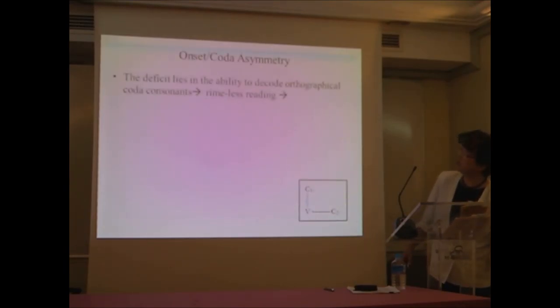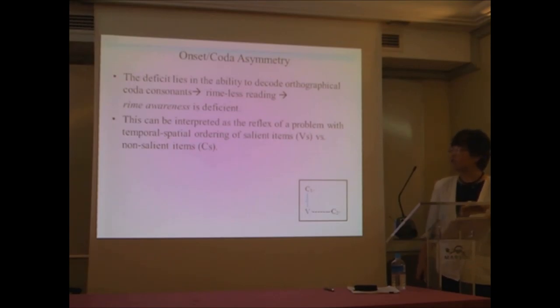So this onset-coda asymmetry can be explained in the following manner. The defect lies in the ability to decode orthographical coda consonants. So her speech is rhymeless. Her reading is rhymeless. And therefore we can say that the rhyme awareness is deficient. In the paper we didn't say it, but in this talk I would like to come up with the rhyme awareness. I'd like to present a new definition of rhyme awareness. So this can be interpreted as a reflex of a problem with temporal-spatial ordering of salient items, that is vowels, and non-salient items, that is consonants.